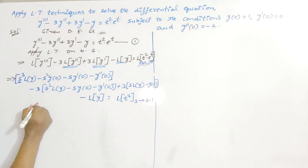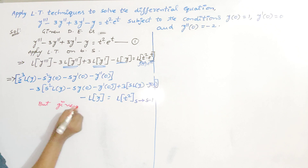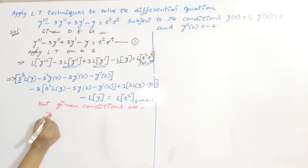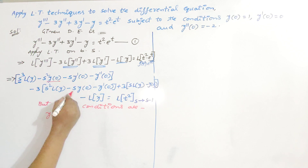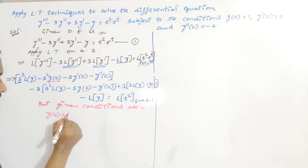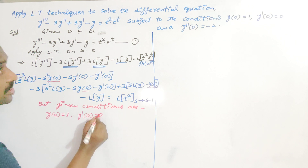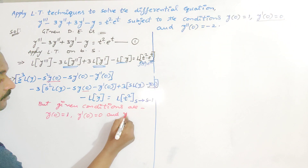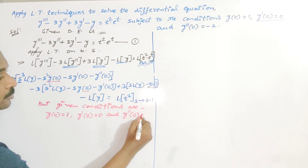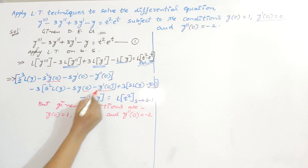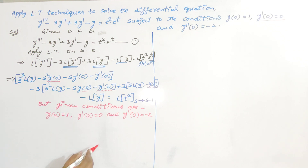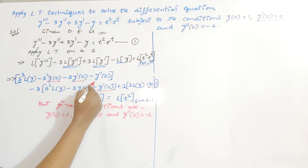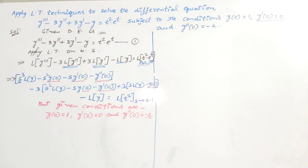Now we apply the initial conditions. The given conditions are: y(0) = 1, so replace y(0) by 1; y'(0) = 0, so replace y'(0) by 0; and y''(0) = -2, so replace y''(0) by -2. Wherever we have y'(0), we replace it by 0, and wherever we have y''(0), we replace it by -2.